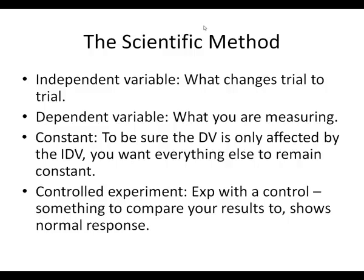The control is going to show us what our normal response should be. For example, if I was conducting an experiment about the effect of amount of sunlight on the growth rate of plants, I might want to compare my results to a plant under normal sunlight conditions — looking at the average sunlight for a given time of year to understand how strongly the sunlight amount affects the growth rate of the plant.